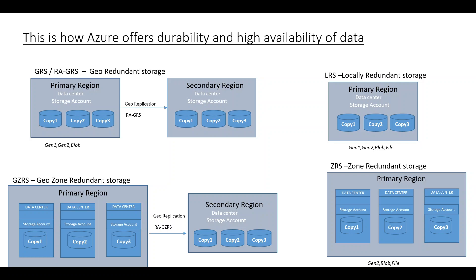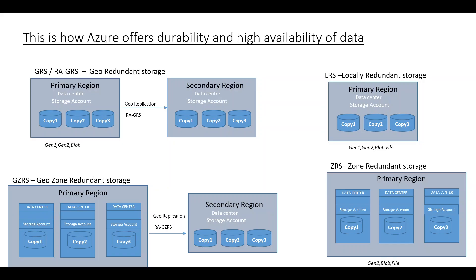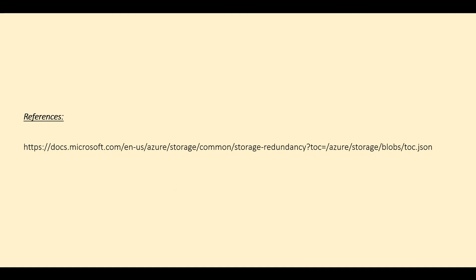If you have data which you can replicate yourself easily in case of any failure, then you can go ahead with locally redundant storage. Otherwise, you can go with the ZRS option as well. One thing to note: in case of ADLS Gen 2, you have the geo-zone-redundant storage option available. You don't have geo-zone-redundant storage enabled for other block and standard options. So make sure that if you are working with Gen 2, only then you have the option to enable geo-zone-redundant storage. You can read the Microsoft documentation, which is a single source of truth and very well documented.